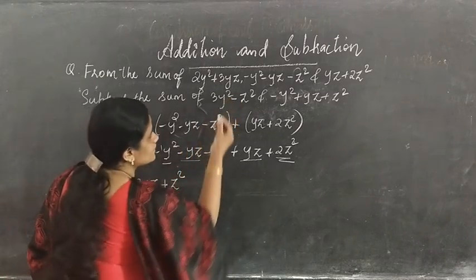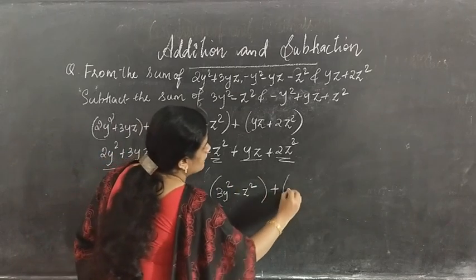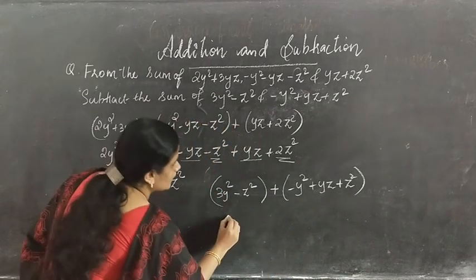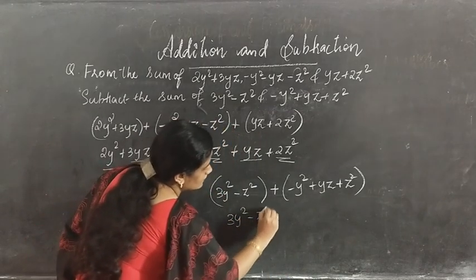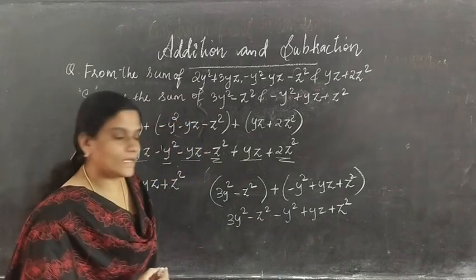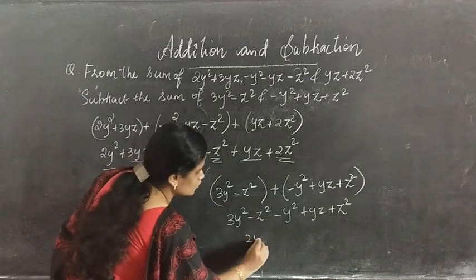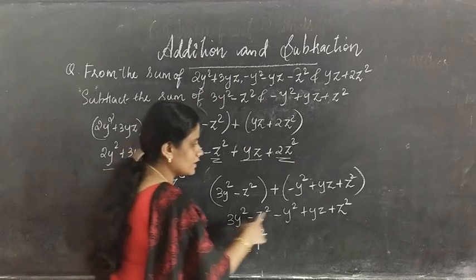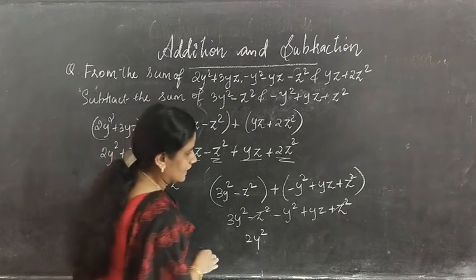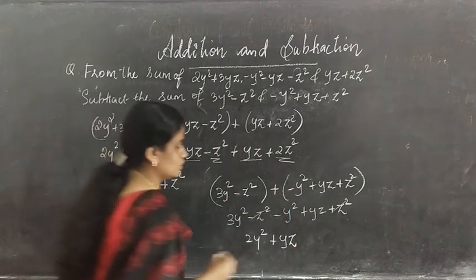Now the second sum: 3y² minus z², plus negative y² plus yz plus z². Opening the bracket: 3y² minus z² minus y² plus yz plus z². So 3y² minus y² gives 2y². Minus z² plus z² — they cancel to zero. Plus yz remains. So the second sum is 2y² plus yz.